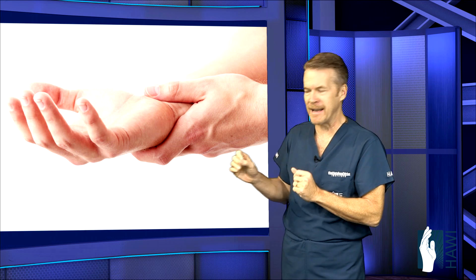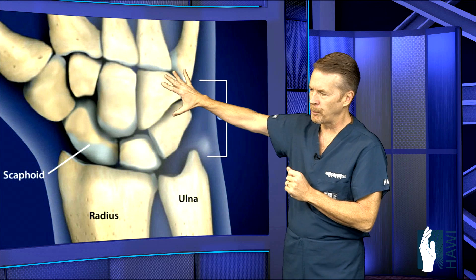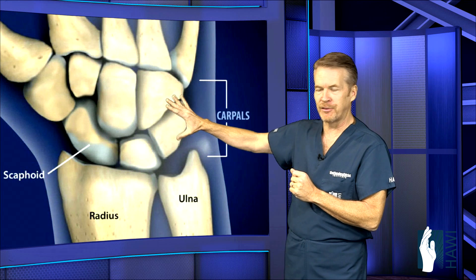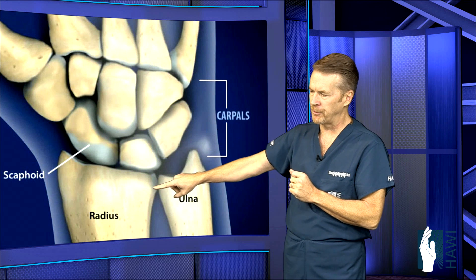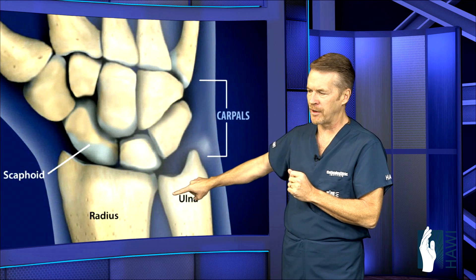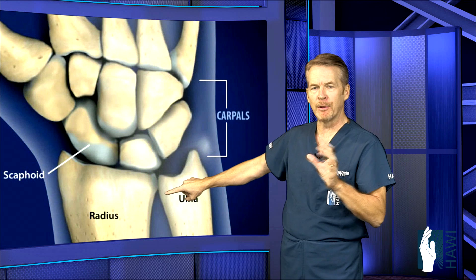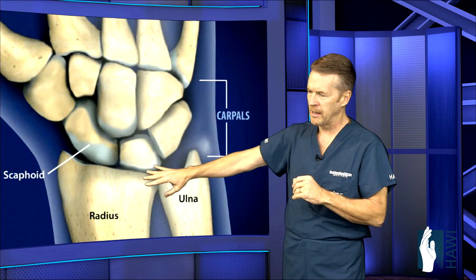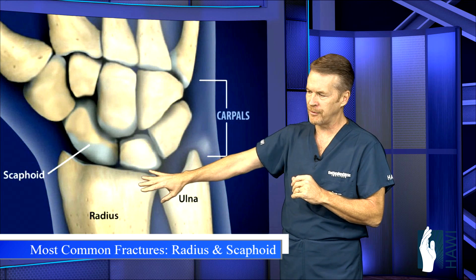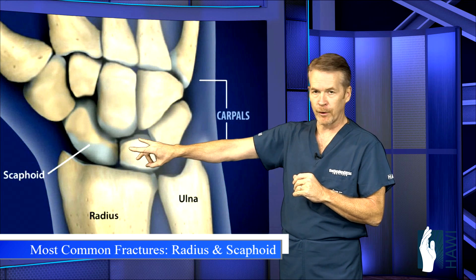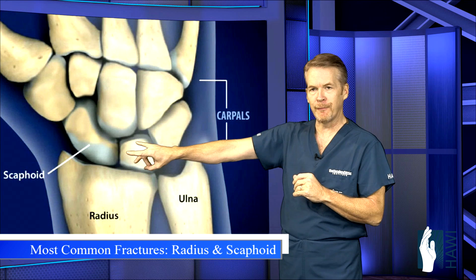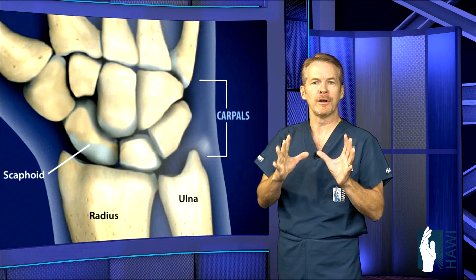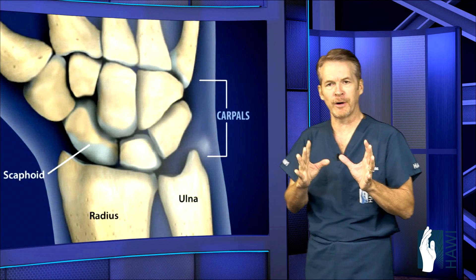Let's look at the anatomy of the wrist. These are the carpal bones. There are eight bones that sit on top of the two forearm bones, the radius and the ulna. The most common fractures in the wrist involve the radius first and the scaphoid second. These are the two most common bones we're going to concentrate on.